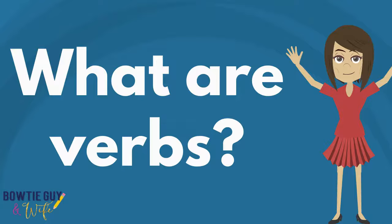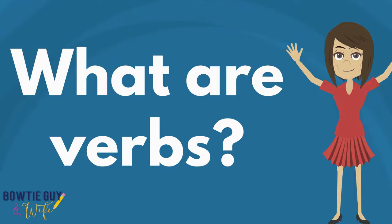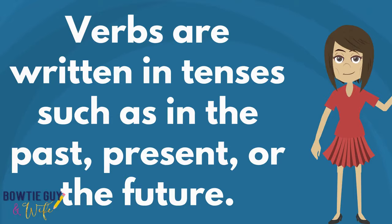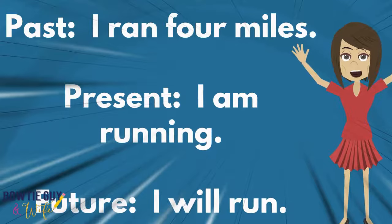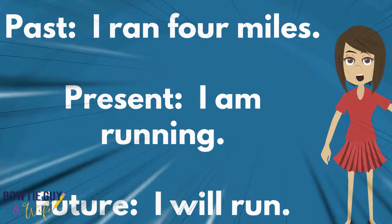Moving on to the next part of speech — what are verbs? Verbs demonstrate an action or a state of being. Verbs are written in tenses, such as the past, present, or future. We can take the verb run and use it three different ways depending on the tense. For example, if I ran in the past: I ran four miles. For the present: I am running, or I run. And if it's going to happen in the future: I will run.